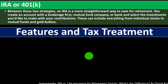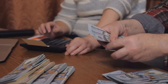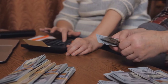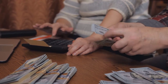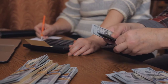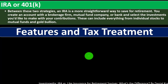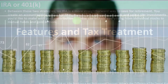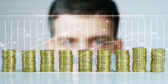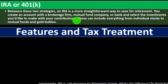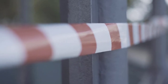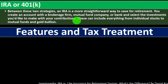Between these two strategies, the IRA is a more straightforward way to save for retirement. If you have access to a 401k, that's usually the way to go — the 401k usually has a larger contribution limit and may have a matching component, often making it more beneficial than an IRA. You create an account with a broker, mutual fund company, or bank and select your investments. Think of IRA and 401k as an umbrella — the actual investment tools underneath, like stocks, bonds, and ETFs, are the same as any other investing.